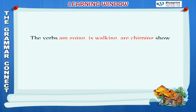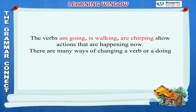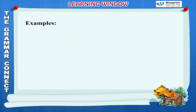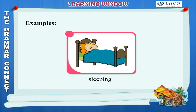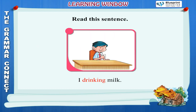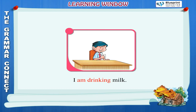The verbs am going, is walking, are chirping show actions that are happening now. There are many ways of changing a verb or a doing word. One of the most common ways is to add ING to it. Sometimes one doing word is not enough to complete a sentence. For example, 'I drinking milk' sounds incomplete. We have to add 'am' before 'drinking' to make complete sense: I am drinking milk.